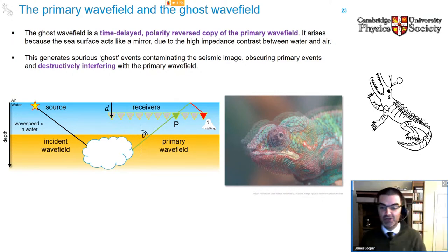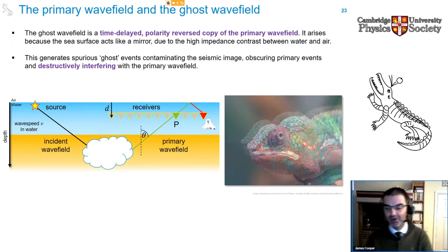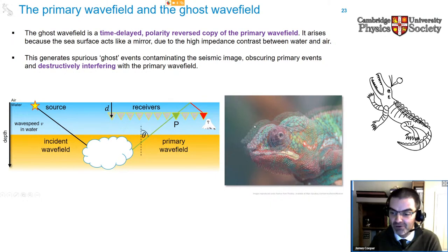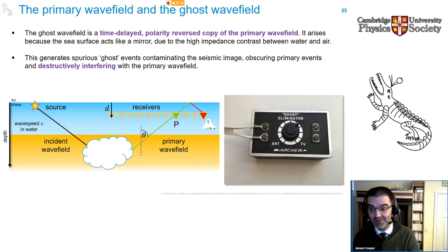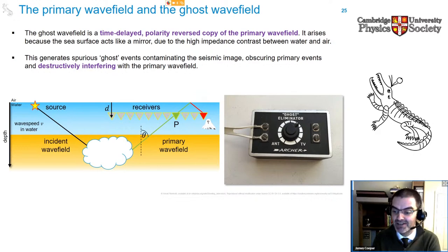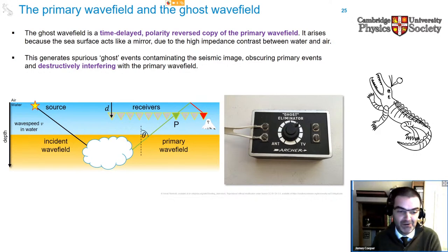Ghosts are not unique to seismic data. For anyone old enough to remember analog television, you may be familiar with ghosting on your TV picture — a duplicate, shifted image. A de-ghosted version looks much cleaner, as illustrated by this chameleon image before and after de-ghosting. De-ghosting machines for TVs did indeed exist — this example was marketed in the 1950s or 60s. They weren't particularly useful and certainly weren't based on any clever inversion scheme, but this illustrates that ghosting was a real problem.